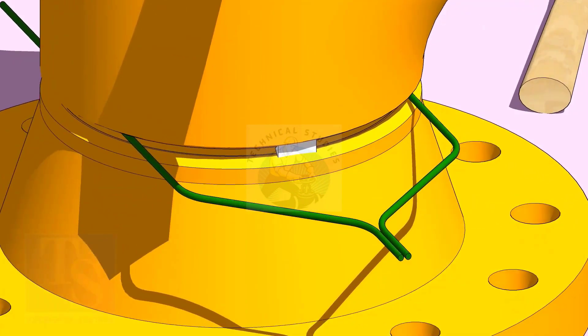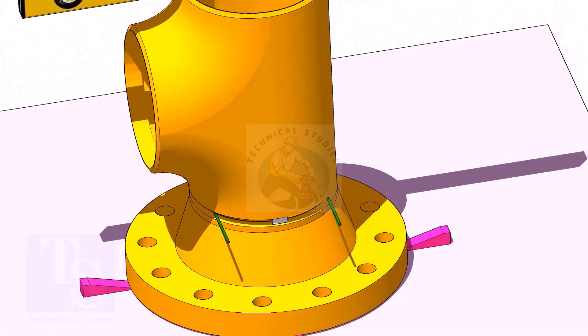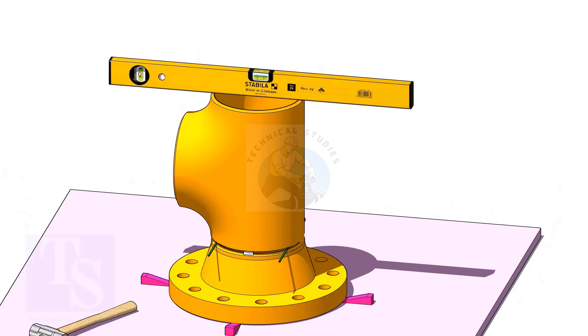Check the top level and tack weld. The sequence of the tack welding shall be 0 to 180 degree and 90 to 270 degree.